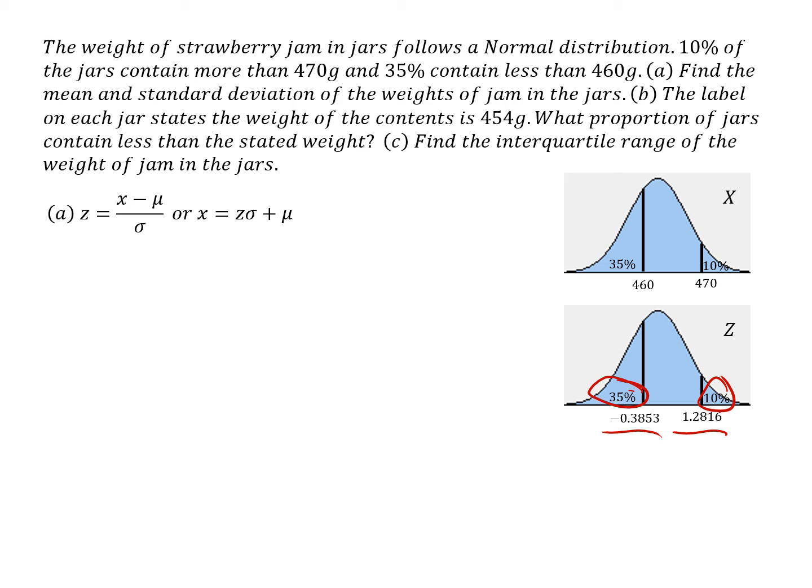So I can now write down an equation connecting these numbers. This 470 here connects with that z value there. It relates to that one. So x equals z sigma plus mu. I can also write a similar equation using this x figure and that z figure. And I've got two equations now, simultaneous equations. To solve these, the simplest way is to simply subtract one from the other and the means then cancel each other out. And I'm left with that little equation.